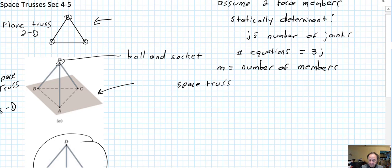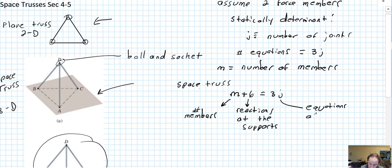So for a space truss in 3D, your equation for determinancy is the number of members plus 6 equals 3j. This is the number of members, this is the reactions at the supports, and this is the equations at joints.